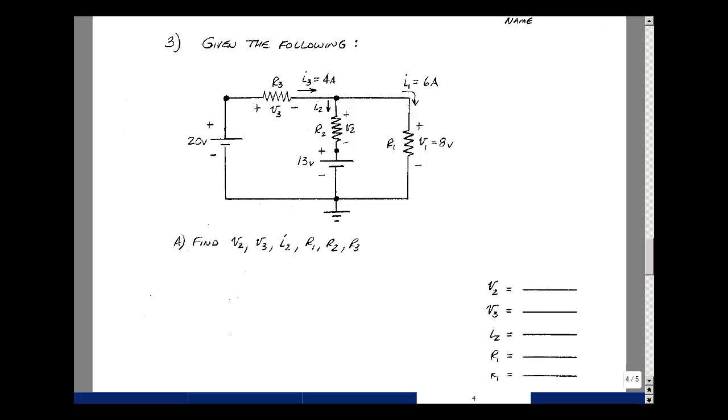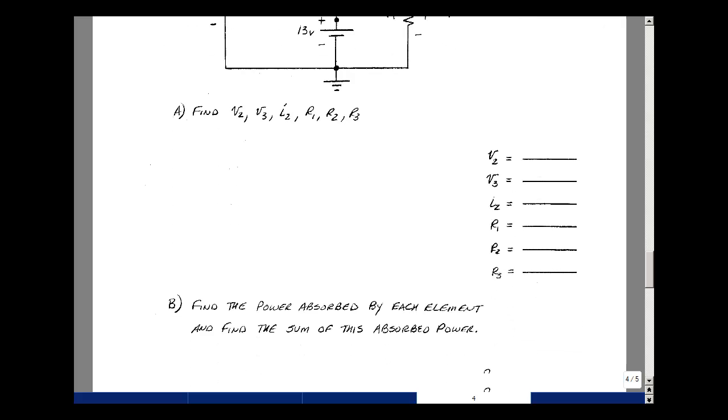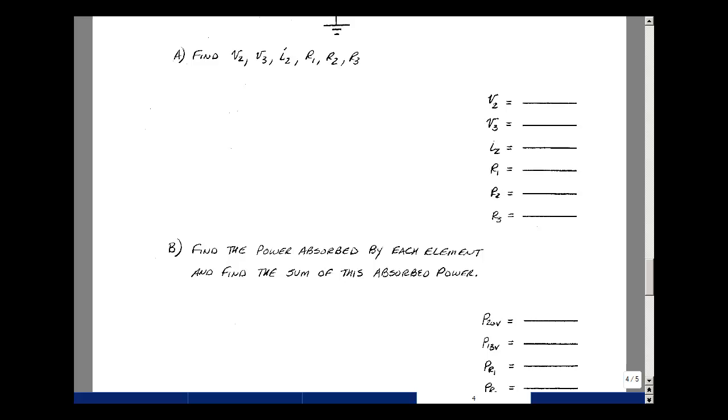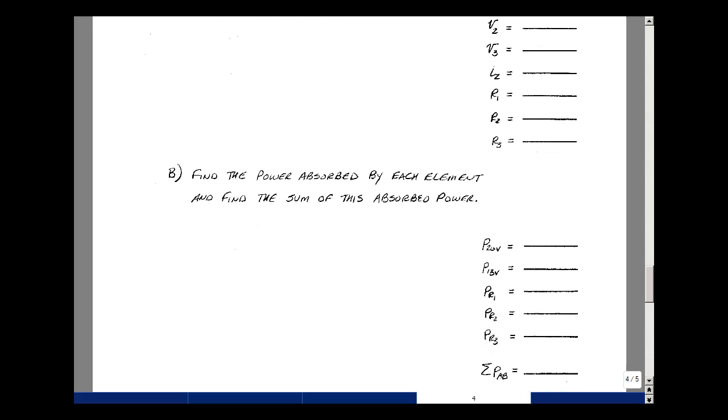For the second part of this, can you use your results from Part A, and find the power absorbed by each element in the circuit, and then find the sum of the absorbed power?